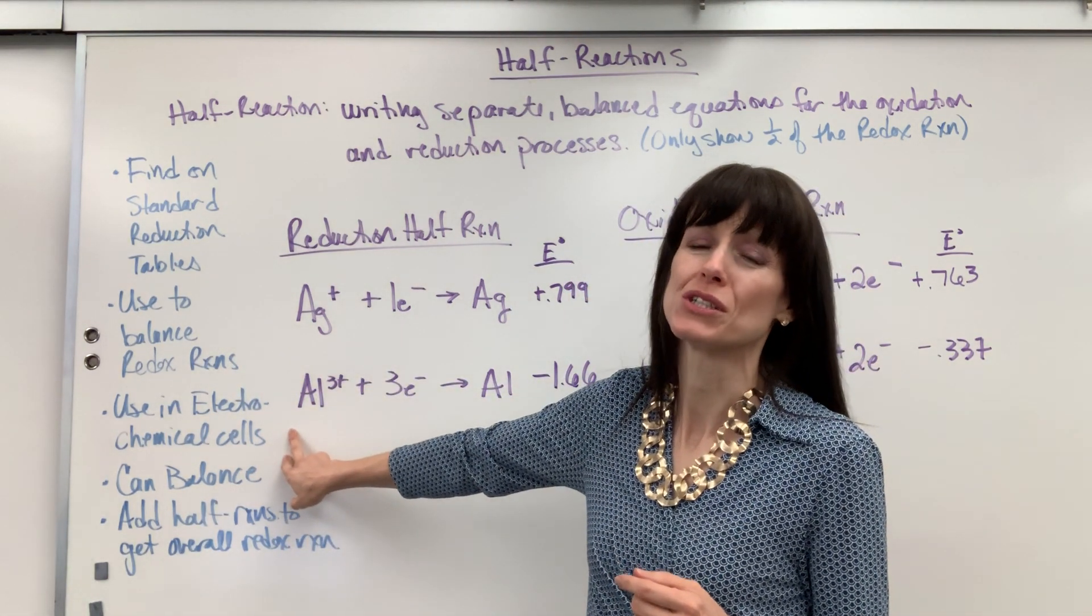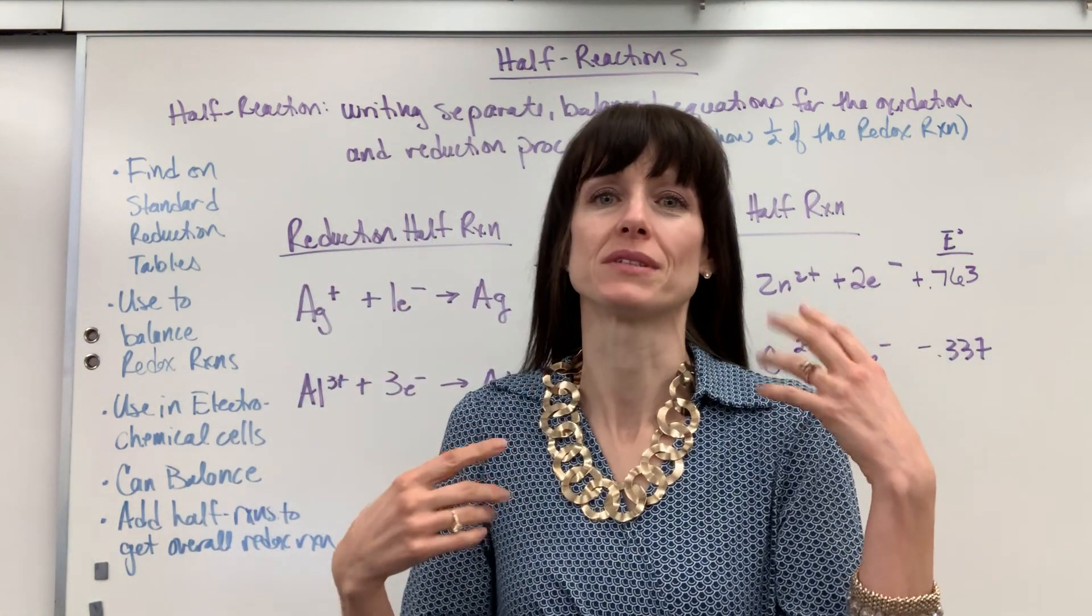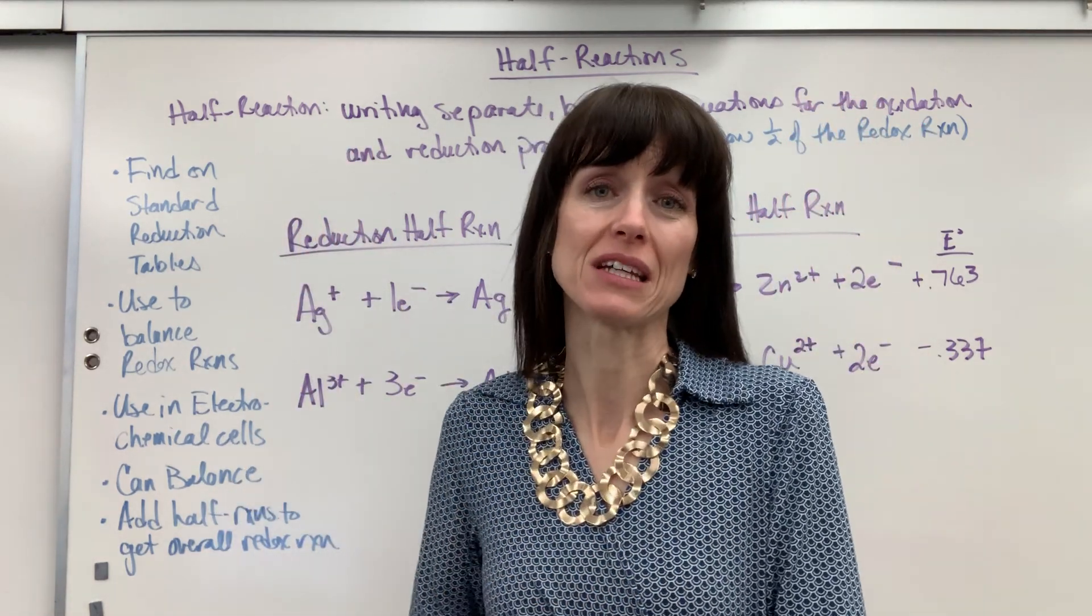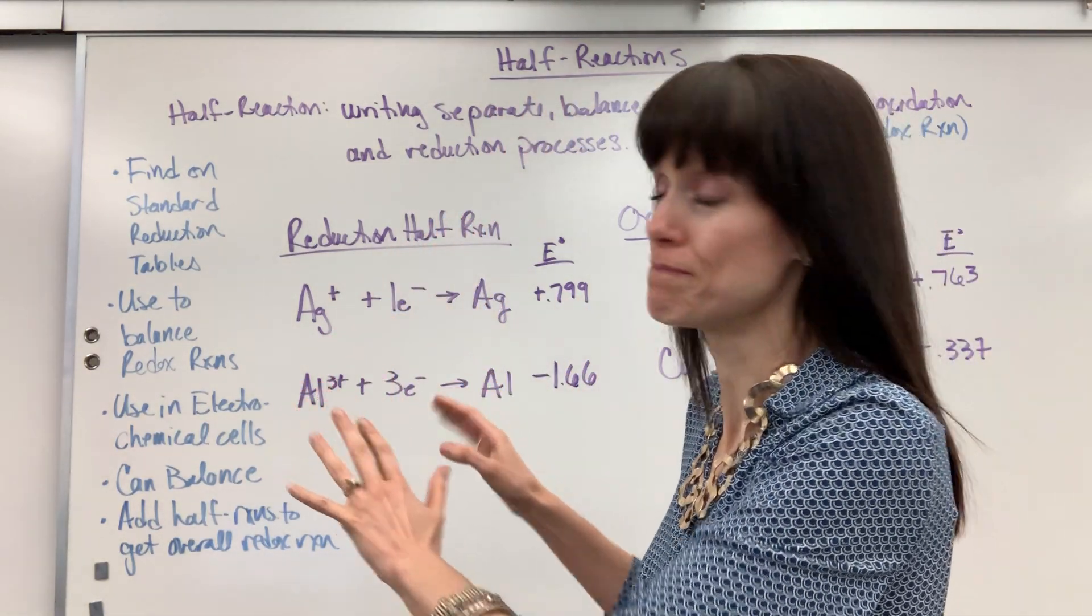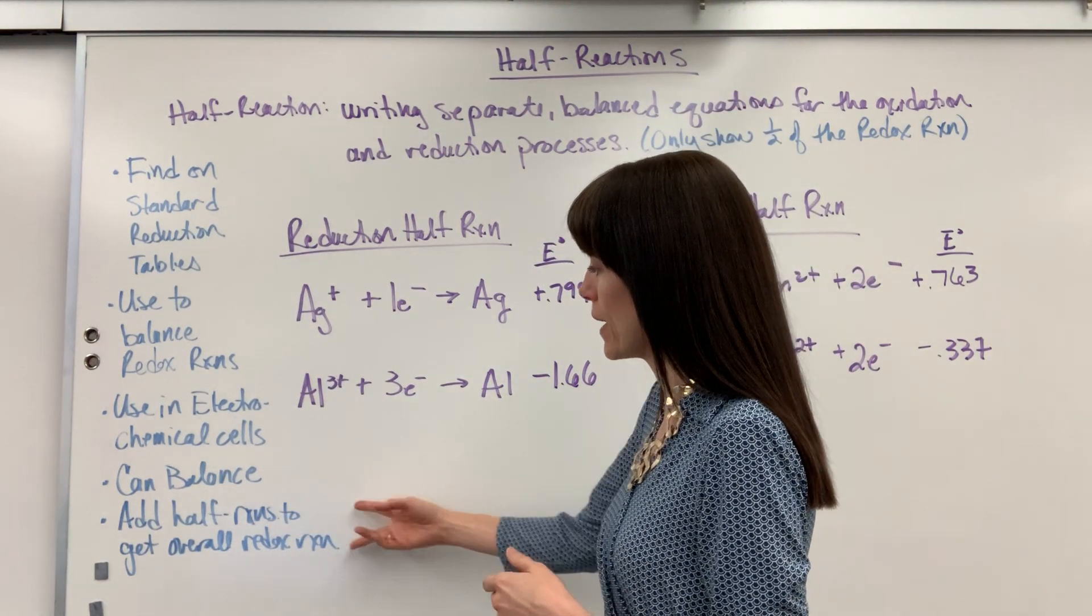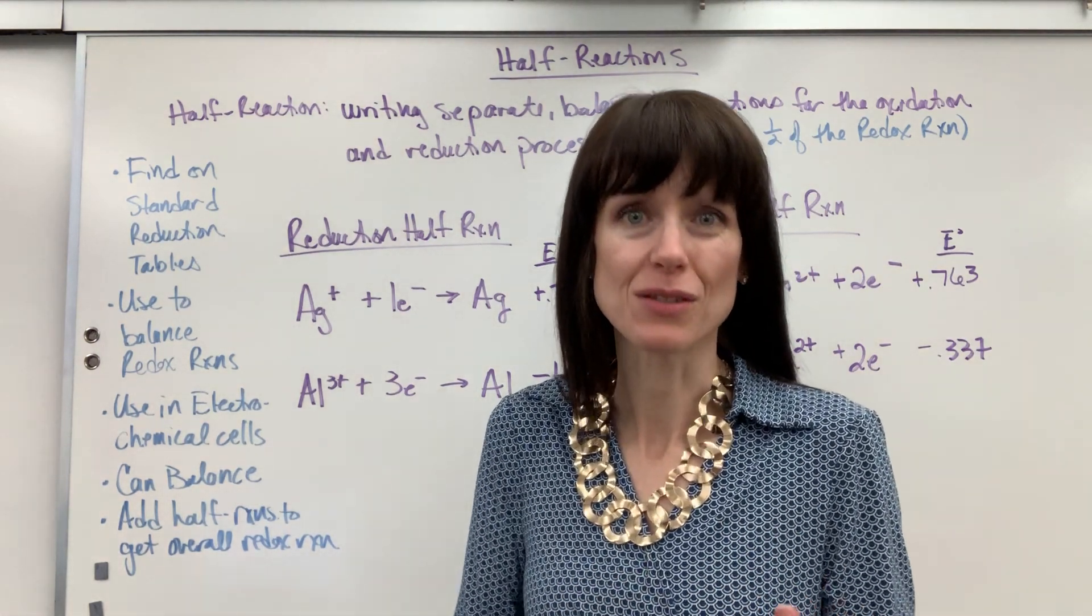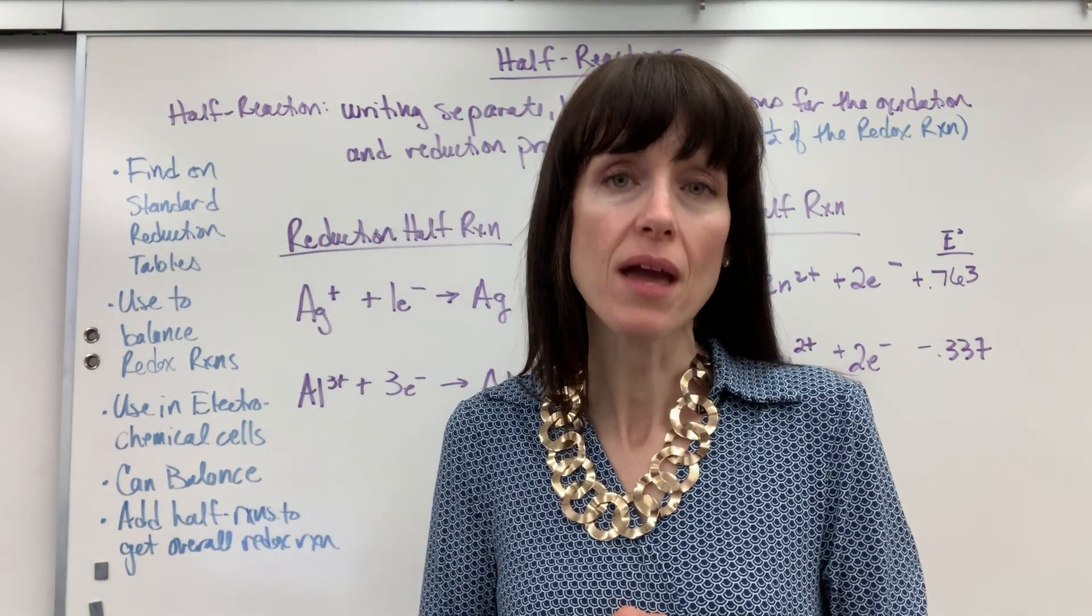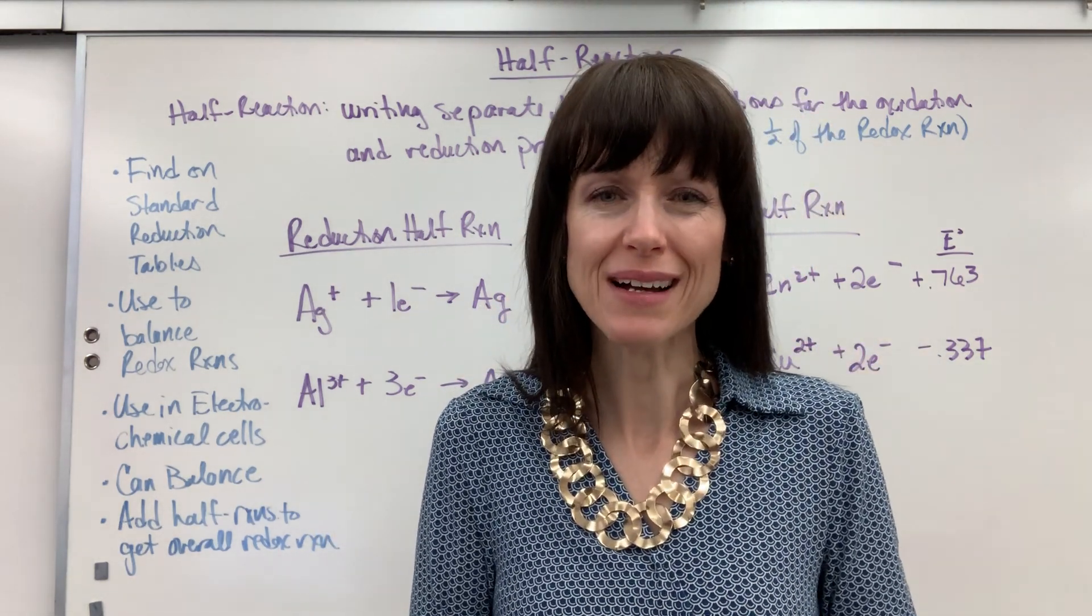This is huge. We use half reactions in electrochemical cells, because in electrochemical cells, one cell is reduction, one cell is oxidation. So, it makes it really convenient that we can write the particular half reaction for that exact cell. You can use these to balance redox reactions, and the way you do that is that you add the half reactions together. You have to be careful that electrons are balanced and that atoms are balanced, just like every redox reaction. But it can be an easy way to balance overall redox reactions.